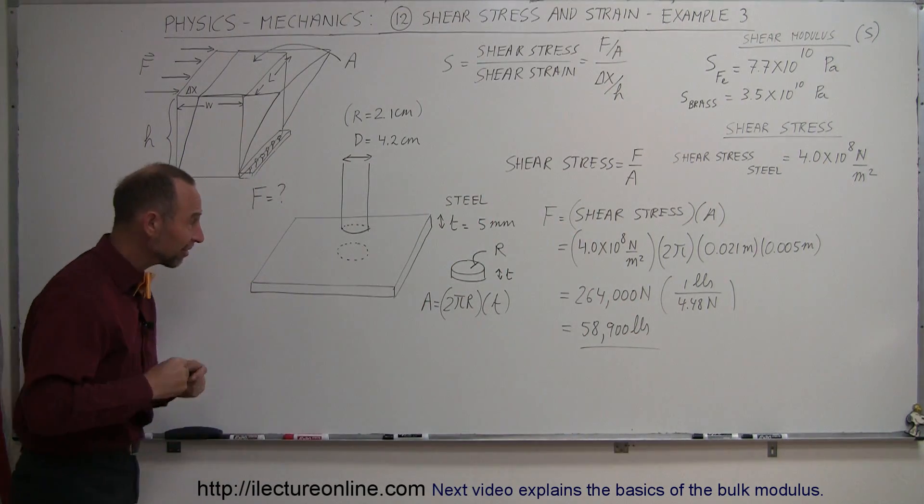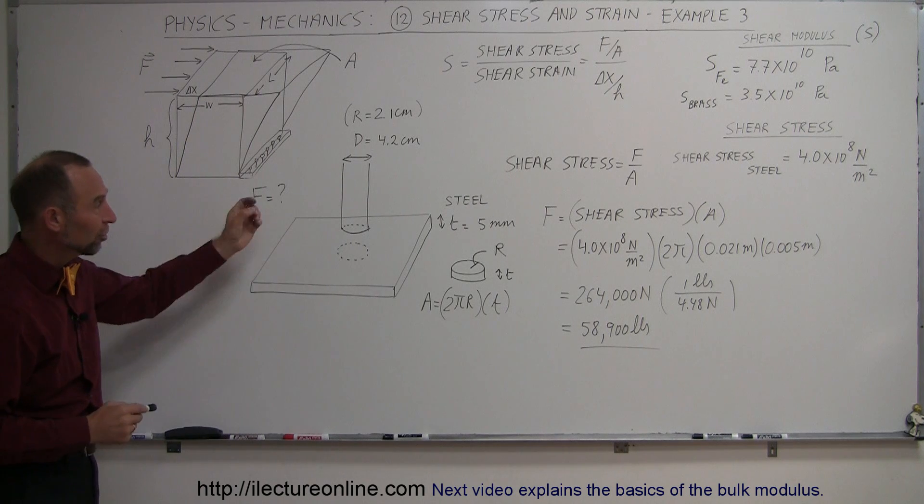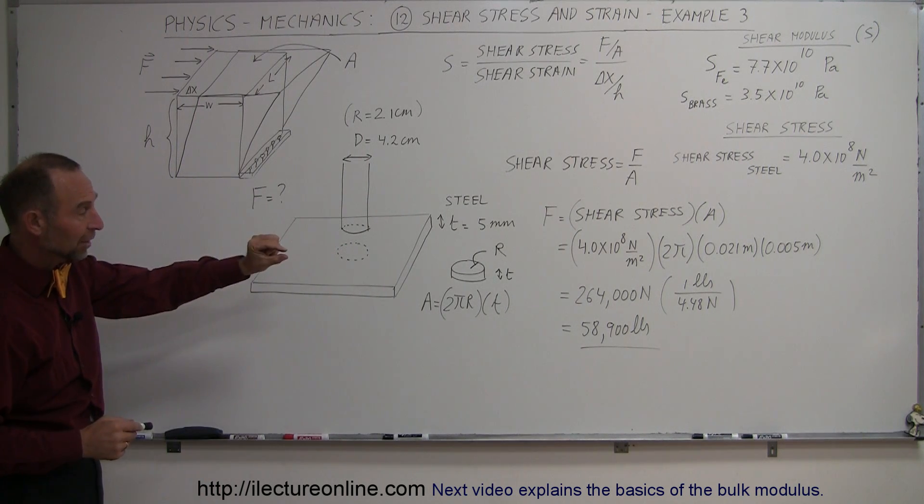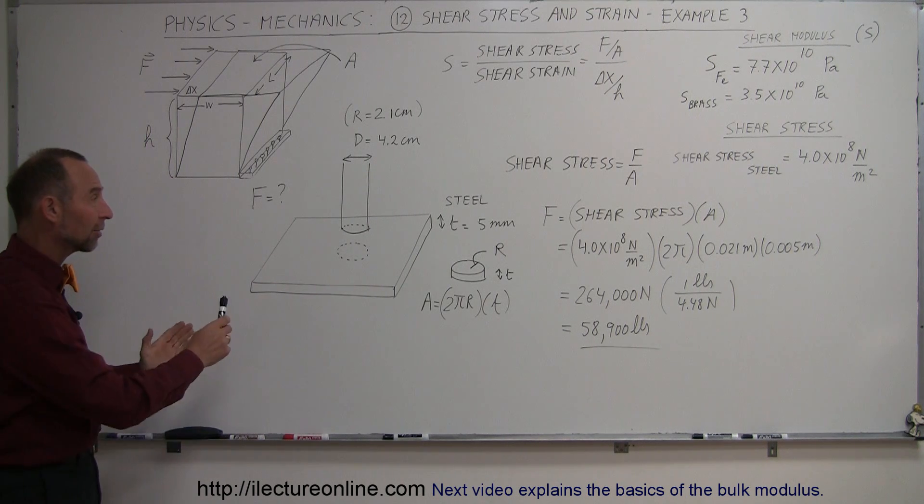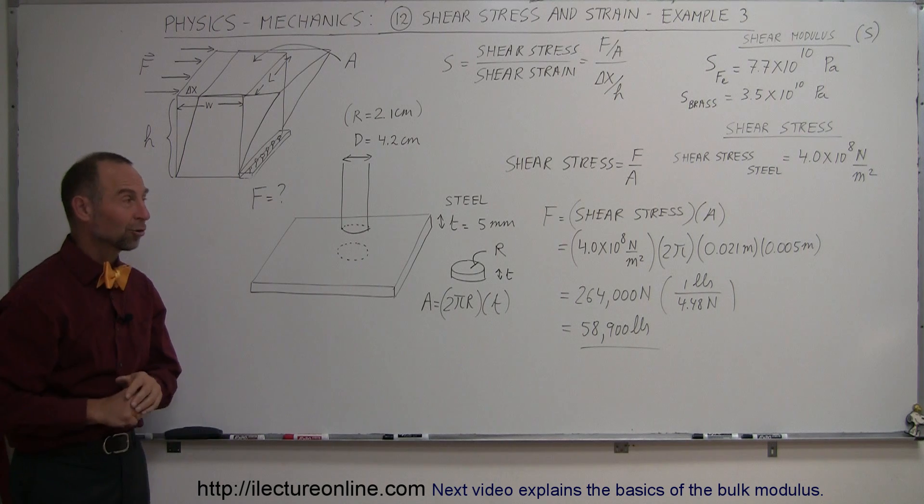So if you build a punch press like that, you want to punch holes through sheets of metal that are 5 millimeters thick, half a centimeter, that requires quite a bit of force. But that's how we calculate that. And that's how that's related to the shear stress and the shear modulus.